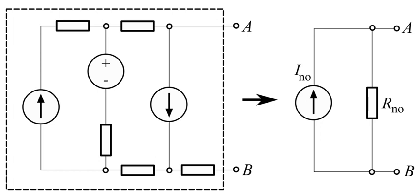For alternating current systems the theorem can be applied to reactive impedances as well as resistances. The Norton equivalent circuit is used to represent any network of linear sources and impedances at a given frequency.